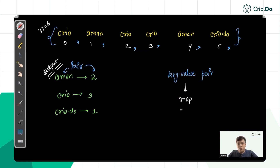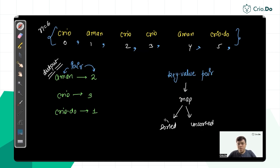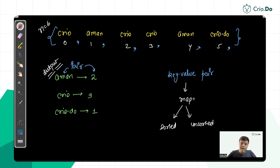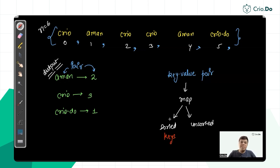In most languages there are two kinds of maps: a sorted map and an unsorted map. The sorted map may be called 'TreeMap' or 'ordered map'; the unsorted one may be called 'unordered map' or 'HashMap'. Since we need all keys (strings) to be sorted, we need a sorted map. Internally, a sorted map uses a binary search tree (BST).